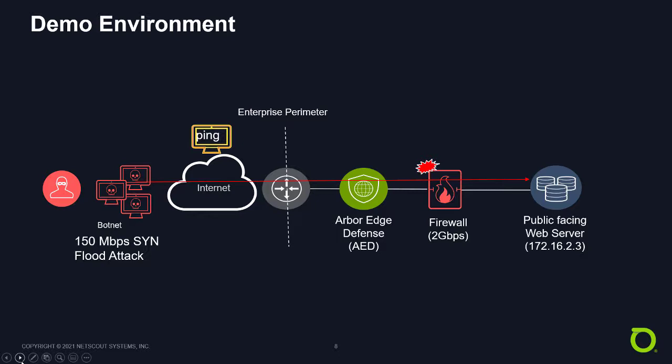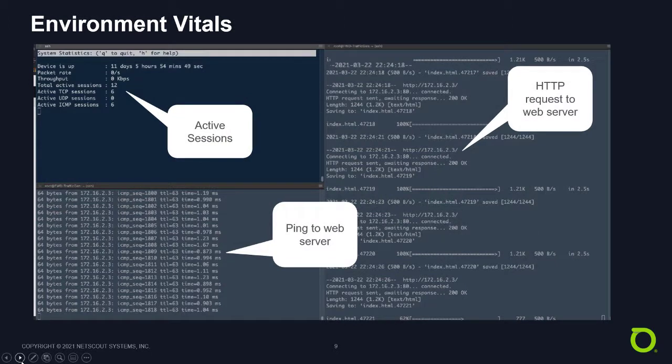The attacker will launch an attack targeting the public-facing web server, and you'll see the firewall start failing. We'll be looking at certain vital signs: in the upper left-hand corner, active connections going through the firewall; in the lower left-hand corner, a client running a simple ping to the HTTP server inside the firewall; and that same client doing a simple HTTP request to a file called index.html, so we can see the success or failure of that. Make note of this screen before we start.